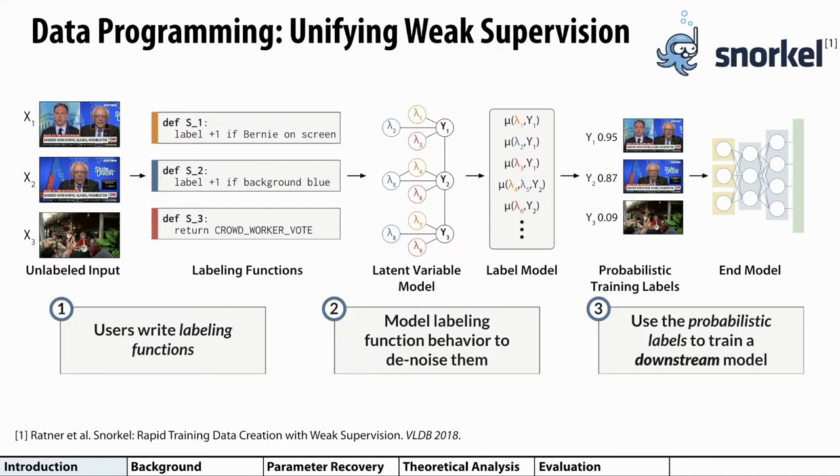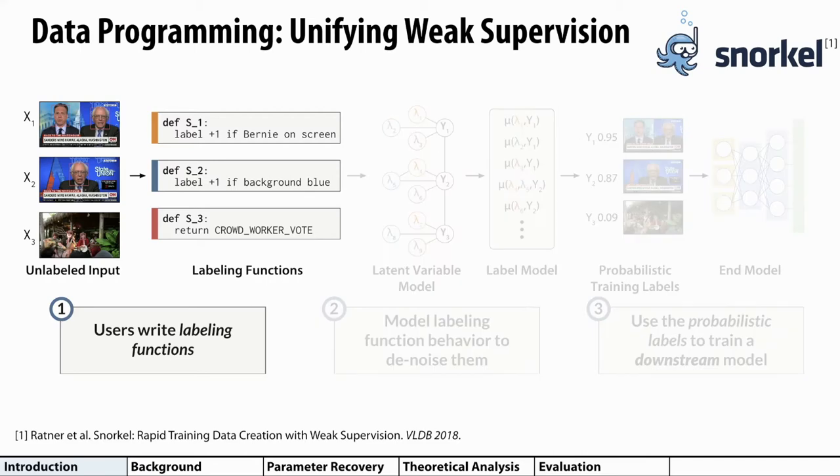Over the past few years, data programming, embodied in systems like Snorkel, has emerged as a popular framework for unifying multiple sources of weak supervision. In data programming, each source of weak supervision is modeled through an abstraction called a labeling function. Labeling functions take in individual data points and either produce noisy labels or abstain, meaning that they don't vote on those data points.